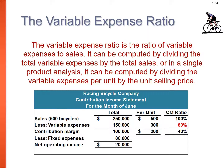The variable expense ratio is the ratio of variable expenses to sales. Just as we found the CM ratio, we find: $300 variable expense ÷ $500 sales = 60%. Now: what is the profit impact if Racing Bicycle increases unit sales from 500 to 540 by increasing the monthly advertising budget by $10,000?